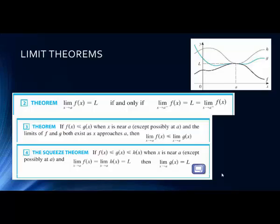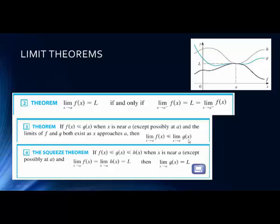Let's look at a couple more things and then we'll be done with this lecture. We're going to look at limit theorems. The first one says that in order for a limit to exist, it exists if and only if the limit from the negative direction equals that limit value, which also equals the limit from the positive direction. So both one-sided limits have to exist and they have to be the same value.